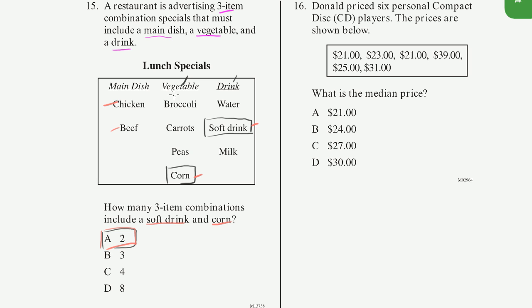But the way I just thought about that is this thing has been constrained for us, the vegetable and the drink, so you could ignore it. And so how many combinations of main dishes are there? Well, there's two, I just counted them, chicken and beef.